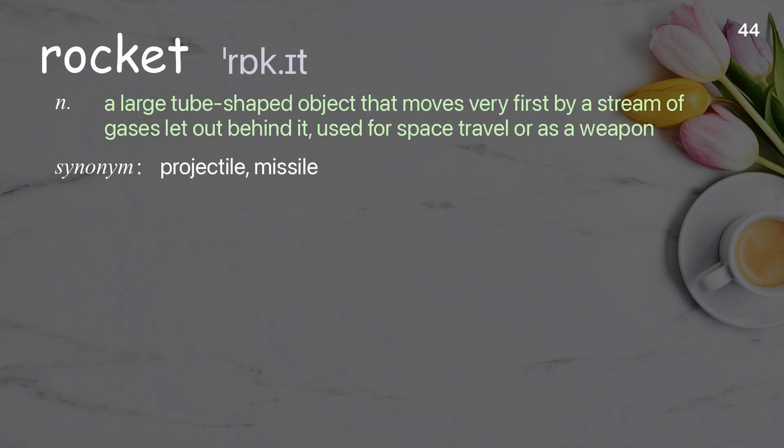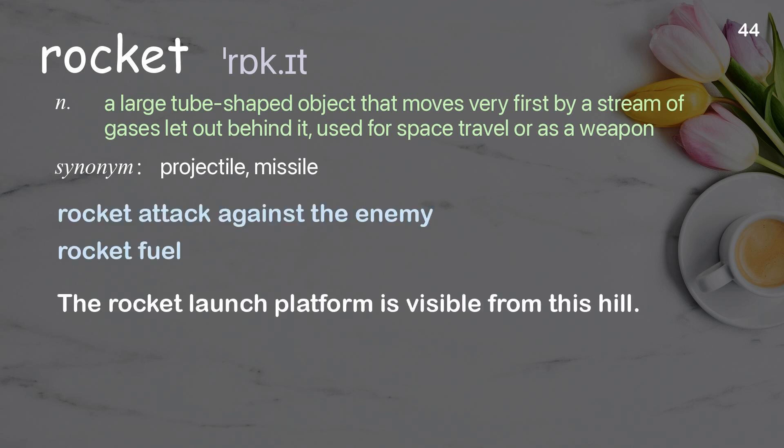Rocket: a large tube-shaped object that moves very fast by a stream of gases let out behind it, used for space travel or as a weapon. Examples: rocket attack against the enemy; rocket fuel. The rocket launch platform is visible from this hill.